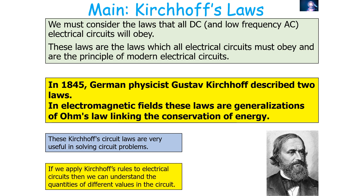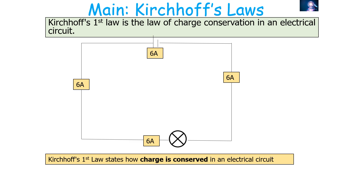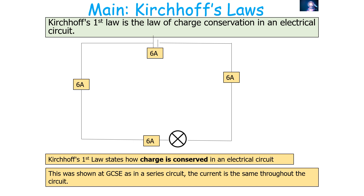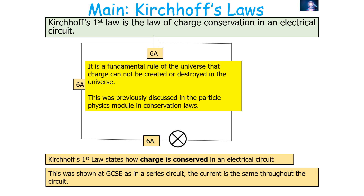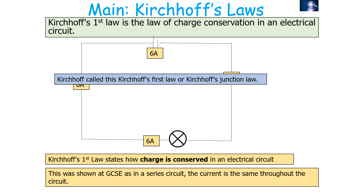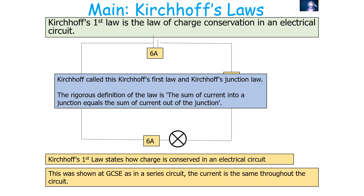If we apply Kirchhoff's rules to electrical circuits, we can understand the quantities of different values in the circuit. Kirchhoff's first law is the law of charge conservation. It states how charge is conserved in an electrical circuit. As shown at GCSE, in a series circuit current is the same throughout. It's a fundamental rule that charge cannot be created or destroyed — also discussed in the particle physics module. Kirchhoff called this the junctions law: the sum of the current into a junction equals the sum of the current out of a junction.